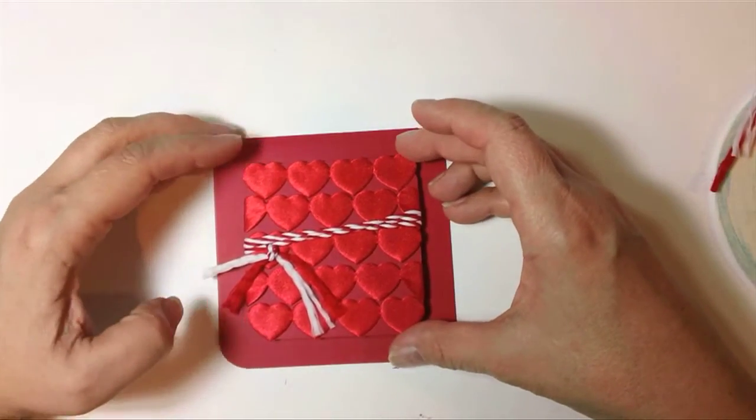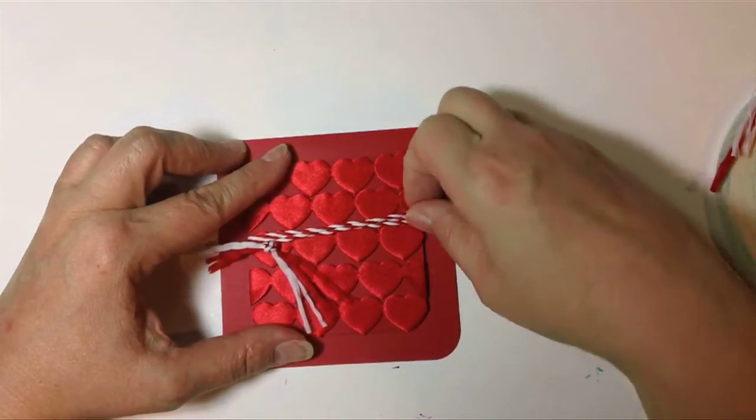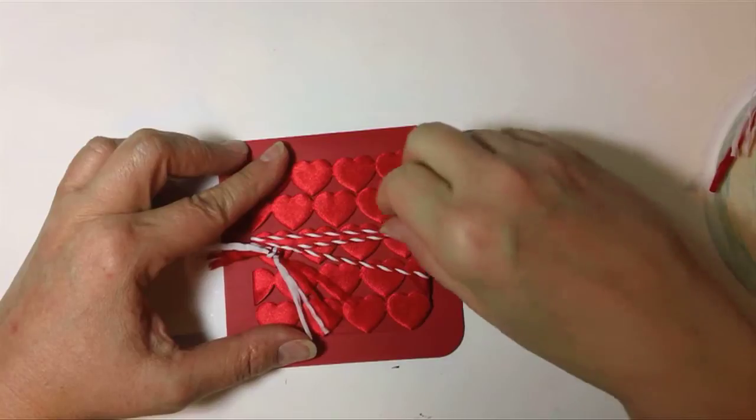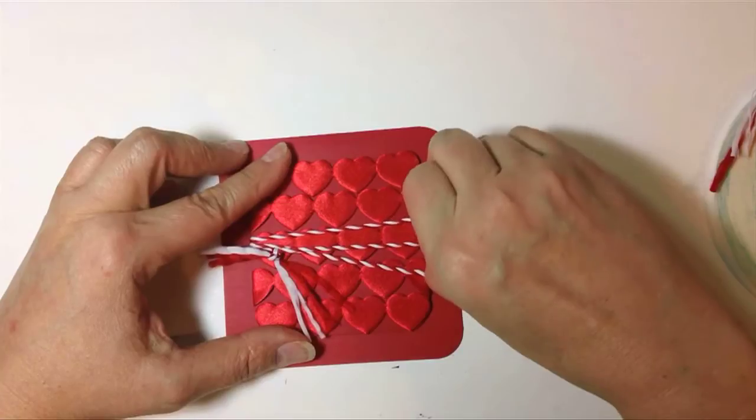I'm going to attach it with some dimensional adhesive on the top and bottom on the front of my card. Now all I have to do is adjust those as I want them. I want one straight across the middle and the other two kind of at angles, so it makes a little fan of the twisted rope.